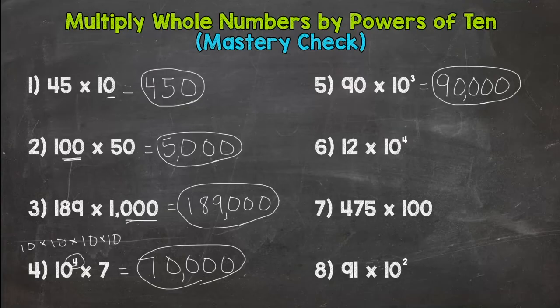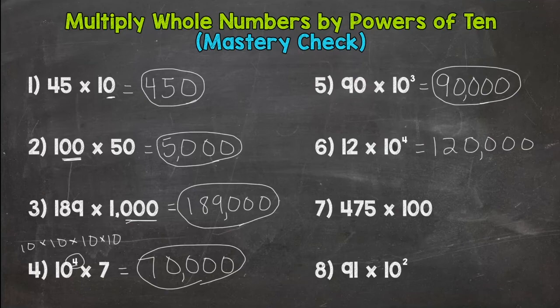Number six, 12 to the fourth, or 12 times 10 to the fourth, which is 12 times 10,000. 12 and four zeros. So we get 120,000.